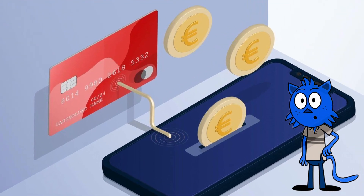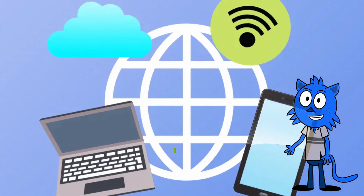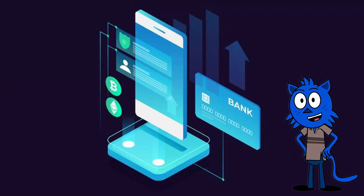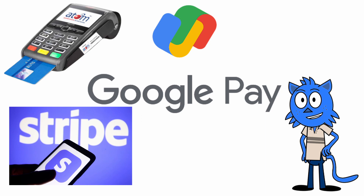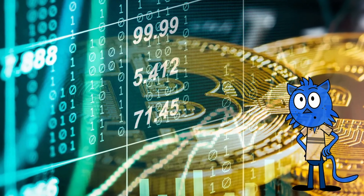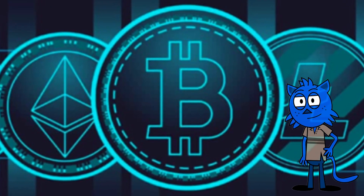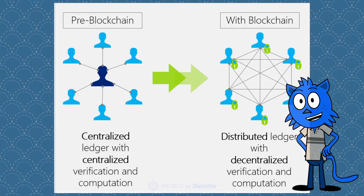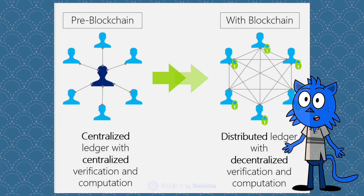The late 20th century marked the shift towards electronic money. Credit cards became increasingly popular. The advent of the internet brought on the next major change — online banking, PayPal, and other digital payment systems began to dominate, making money increasingly virtual. The 21st century gave birth to cryptocurrencies, the most famous being Bitcoin, introduced in 2009. Cryptocurrencies are decentralized digital currencies, without a central bank or single administrator, that can be sent from user to user on the peer-to-peer network.